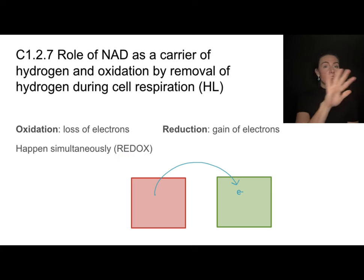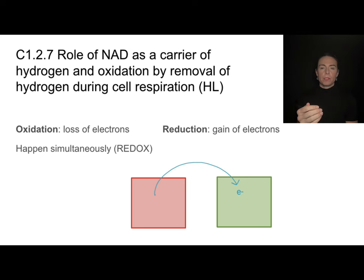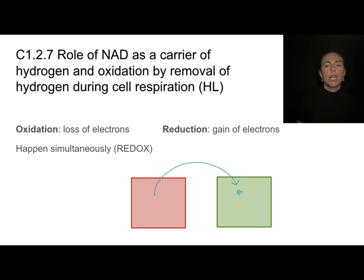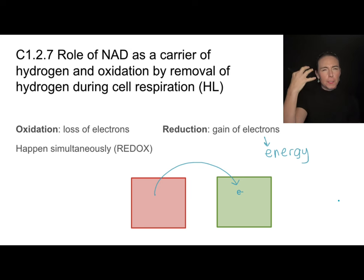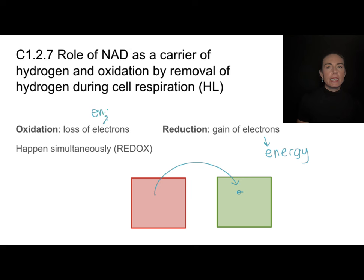There are a lot of things that go along with redox, and if you're also taking chemistry, you'll learn a lot more about this. From a biological perspective, it's important to keep your eye on two things: where is the electron, and where is the energy? In general, these electrons are going to be carrying energy. If you're gaining electrons, think of that as that molecule is gaining energy. If something is losing electrons, we can think of that as it is losing energy.